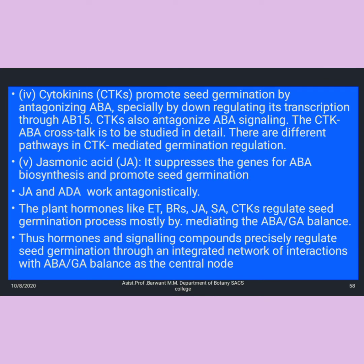Cytokinins promote seed germination by antagonizing ABA (abscisic acid), which is a growth-retarding hormone. To inhibit ABA, certain hormones are used. Cytokinins promote seed germination by antagonizing ABA, regulating the transfer through the ABA pathway. Cytokinin (CTK) also antagonizes ABA signaling, and the CTK-ABA cross-talk has been studied in detail through different pathways of CTK-mediated germination regulation.